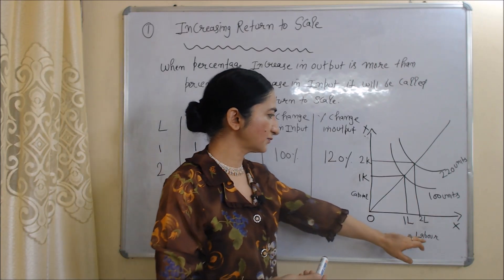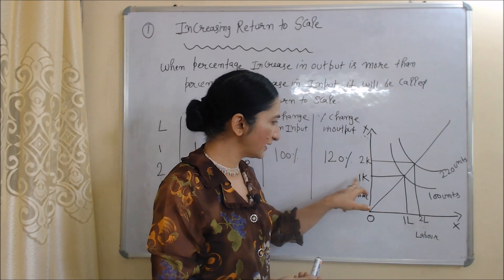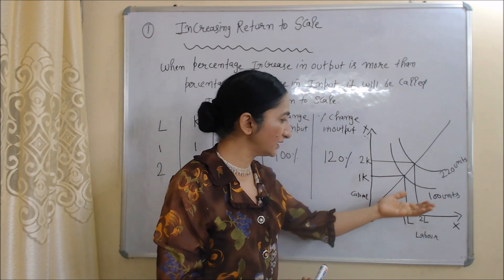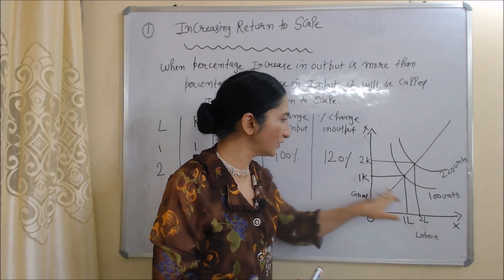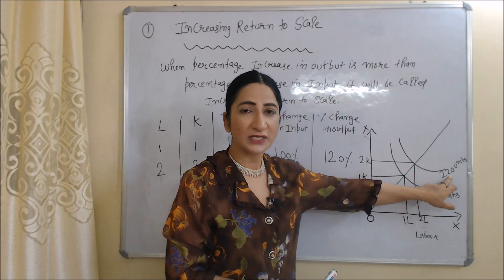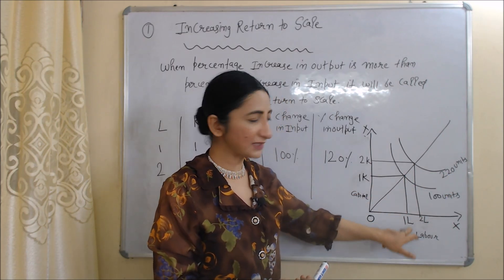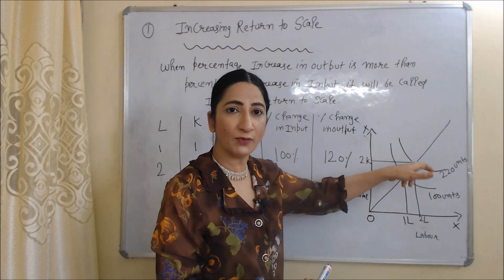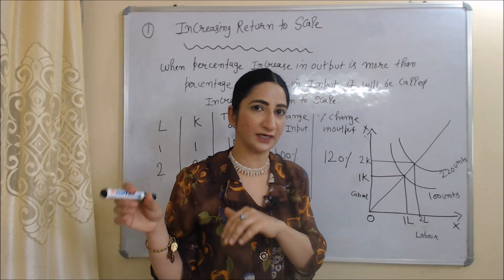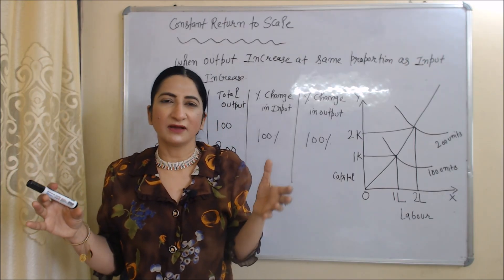The same thing is shown in the diagram. On the x-axis we have labor and on the y-axis we have capital. One labor and one capital gives 100 units of production, but when we increase labor and capital from one to two, output increases from 100 to 220. Percentage change in input is 100% but percentage change in output is 120%, so this is called increasing returns to scale.